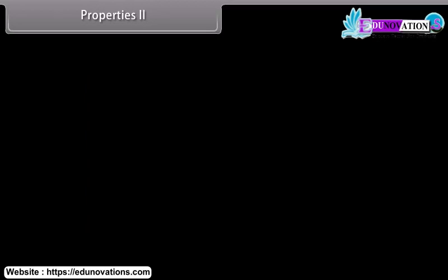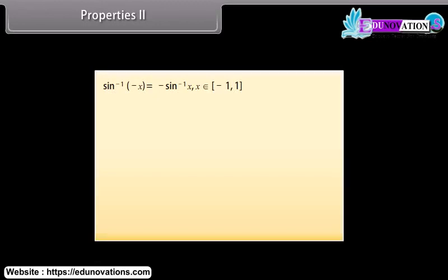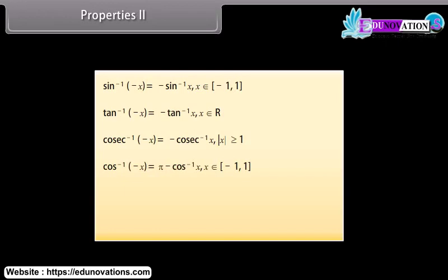Properties 2: sin⁻¹(−x) = −sin⁻¹ x for x ∈ [−1, 1]. tan⁻¹(−x) = −tan⁻¹ x for x ∈ ℝ. cos⁻¹(−x) = π − cos⁻¹ x for |x| ≤ 1. cot⁻¹(−x) = π − cot⁻¹ x for x ∈ ℝ.